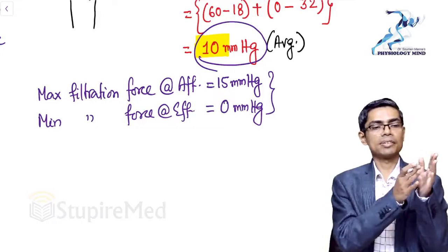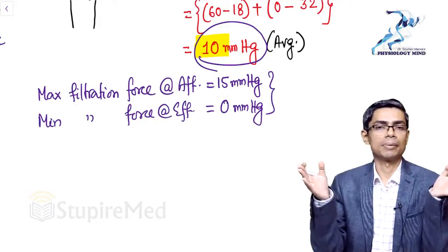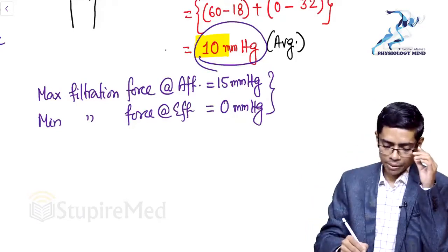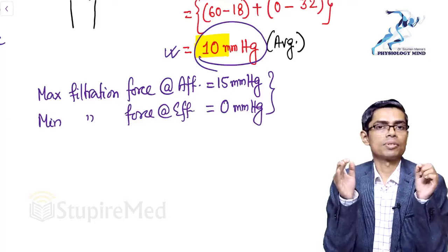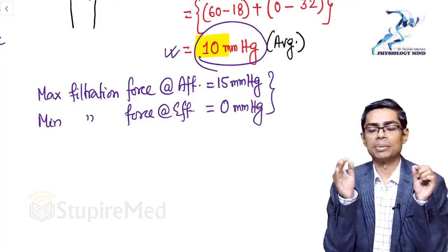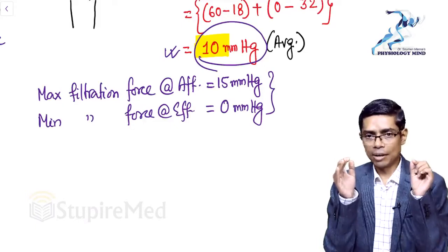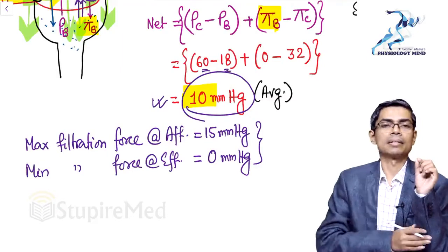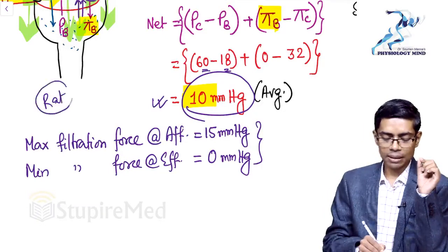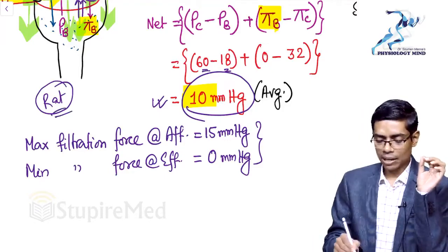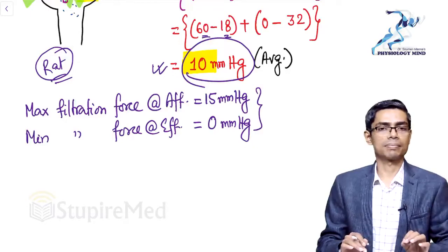As fluid moves from afferent to efferent end, filtration becomes almost zero. The 10 mmHg is the average force throughout the glomerular capillary, as given in Guyton. In Ganong, the filtration force at the afferent arteriole is stated as 15 mmHg, and the values (60, 18) differ because they are derived from rat experiments, not human. So follow Guyton's values for these calculations.